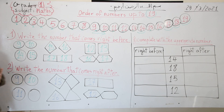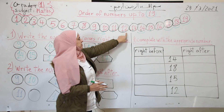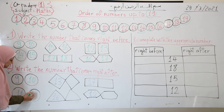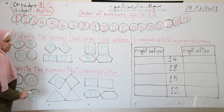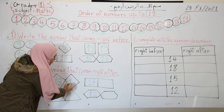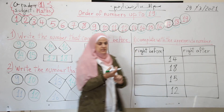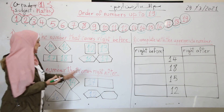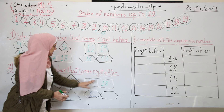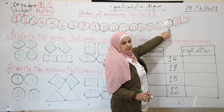After 11: I want to find the number that comes right after 11 — that is 12. After 13: 14 comes right after 13, so I write 14. After 17: 18 is the number that comes right after 17 — so 17, 18. After 16: 17 comes right after 16, so I write 17.